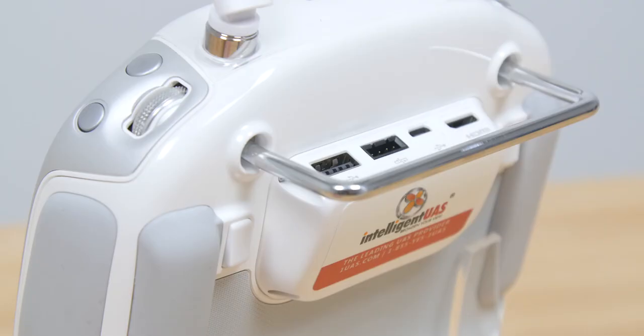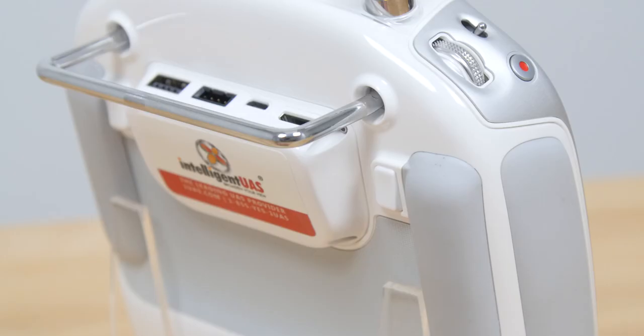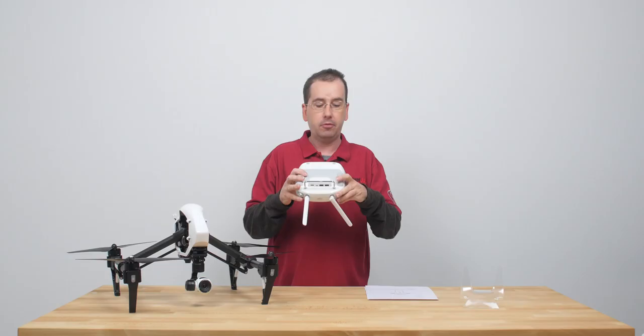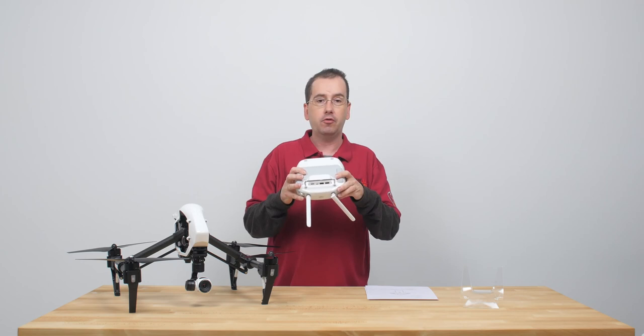And then we have these two back buttons. Now these are programmable buttons. You can program them to do different features. What we've programmed them to do is the left button will allow us to do three gimbal modes that you're familiar with: H3, H-Trace, and Reset.